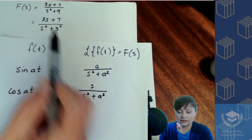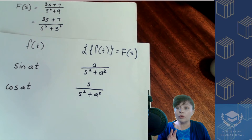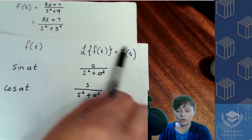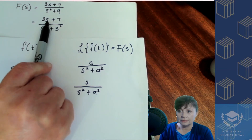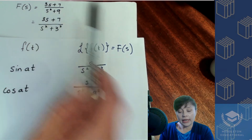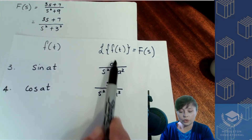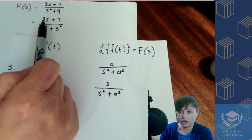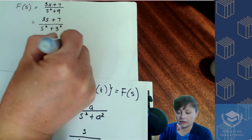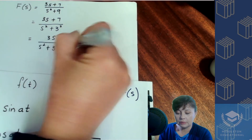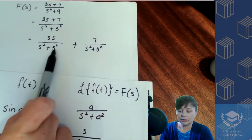Now the denominator is in exactly the same form as on the table, and that's the key — your function must be in exactly the same form as your formula sheet. Once the denominator is in place, we move to the numerator. The numerator has two terms, and according to the formula sheet entries three and four, we can only have one term in the numerator. So we split it into two separate fractions: three s over s squared plus three squared, plus seven over s squared plus three squared.